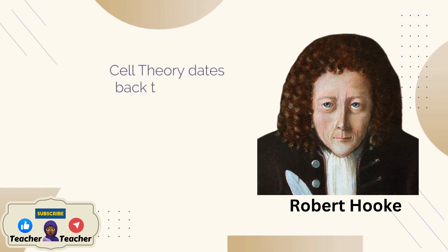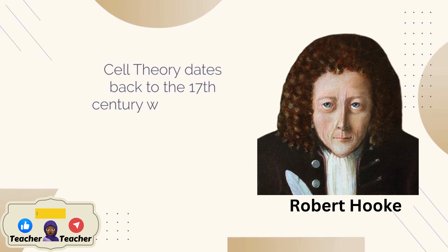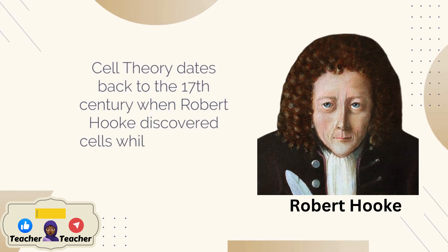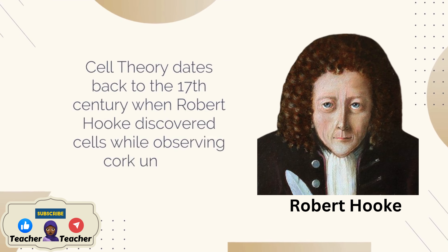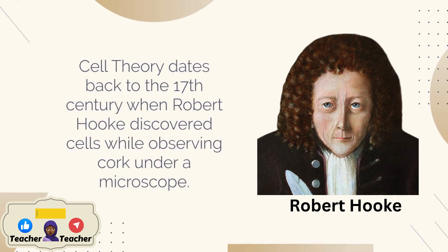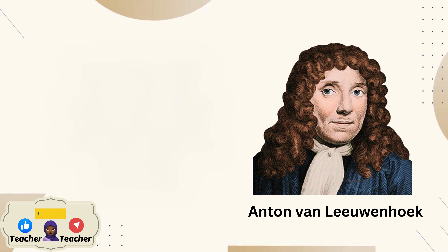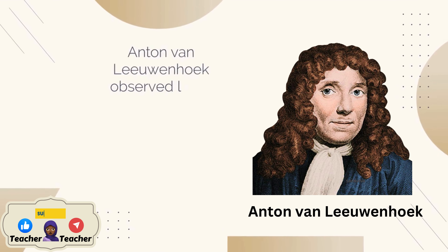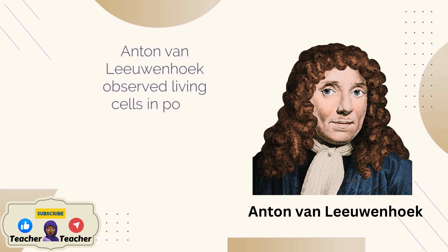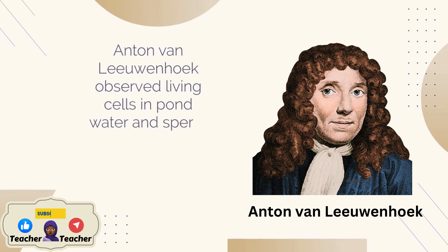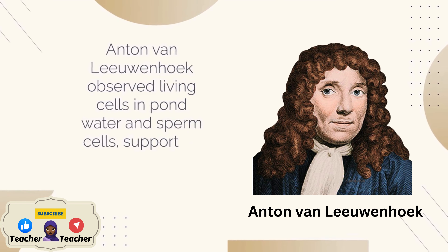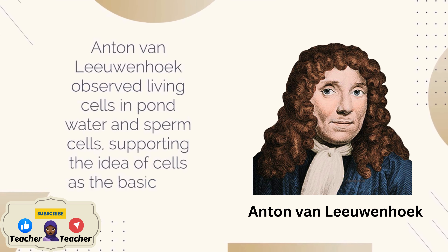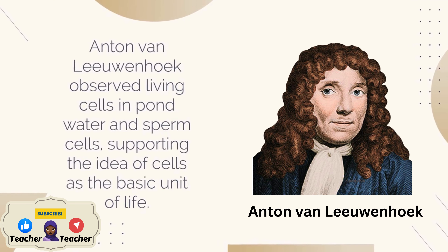Cell theory dates back to the 17th century when Robert Hooke discovered cells while observing cork under a microscope. Anton van Leeuwenhoek observed living cells in pond water and sperm cells, supporting the idea of cells as the basic unit of life.